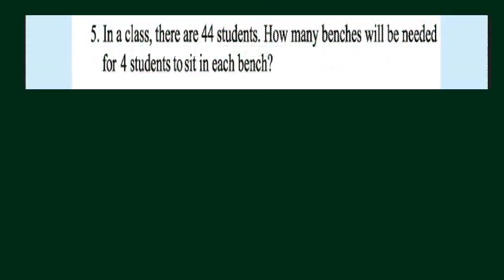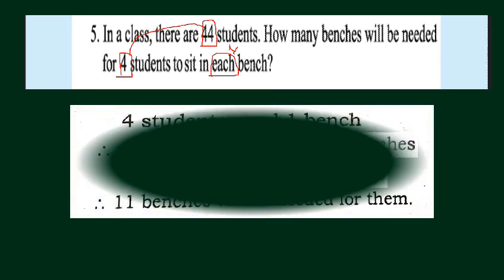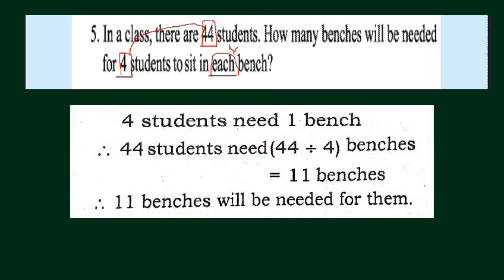The next question: in a class there are 44 students. How many benches will be needed if 4 students sit on each bench? We have 44 students and 4 students can sit on one bench. Here is the answer pattern: 4 students need 1 bench, so 44 students need 44 ÷ 4 = 11 benches.